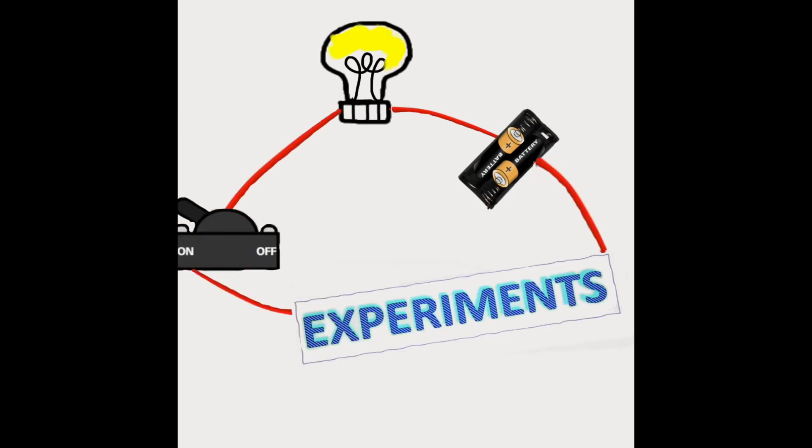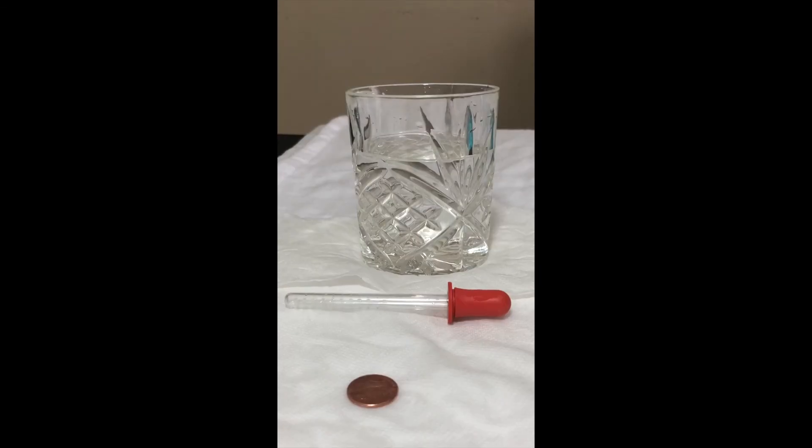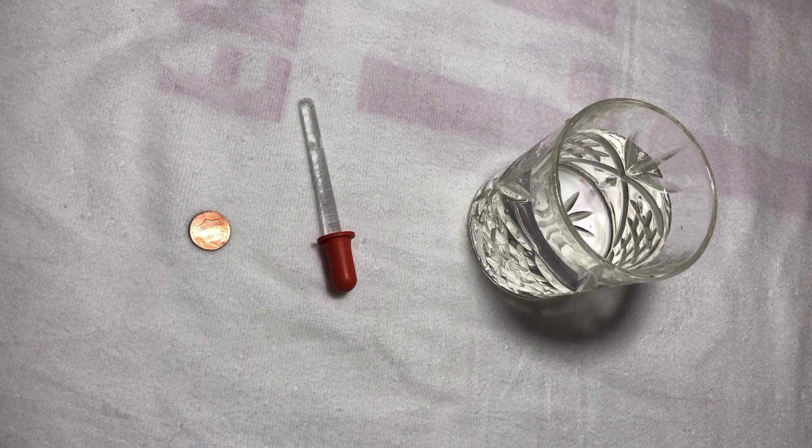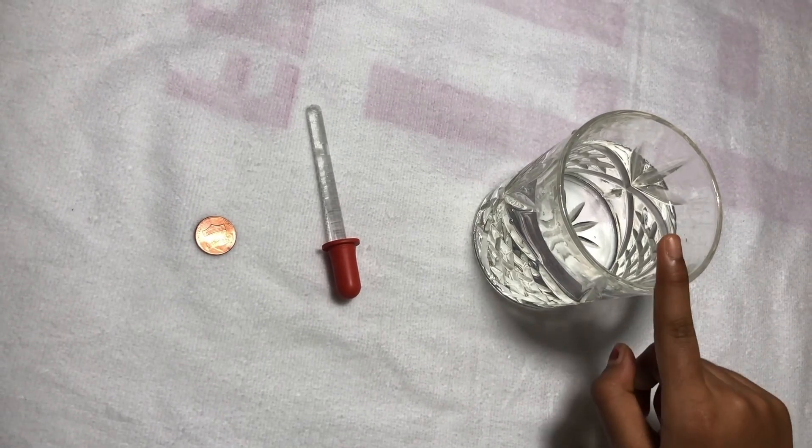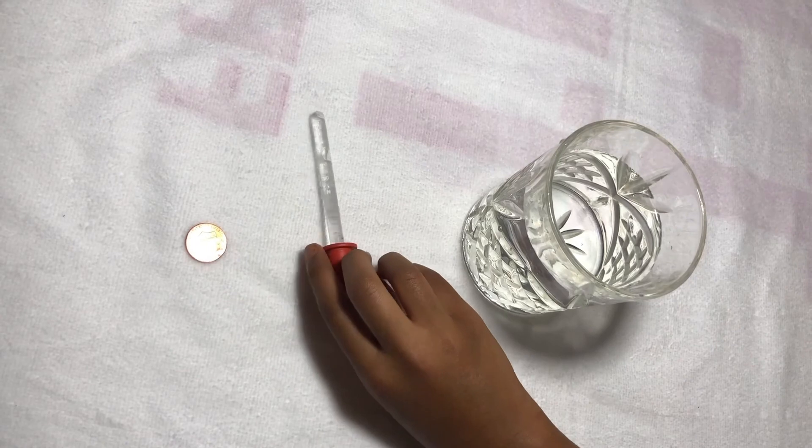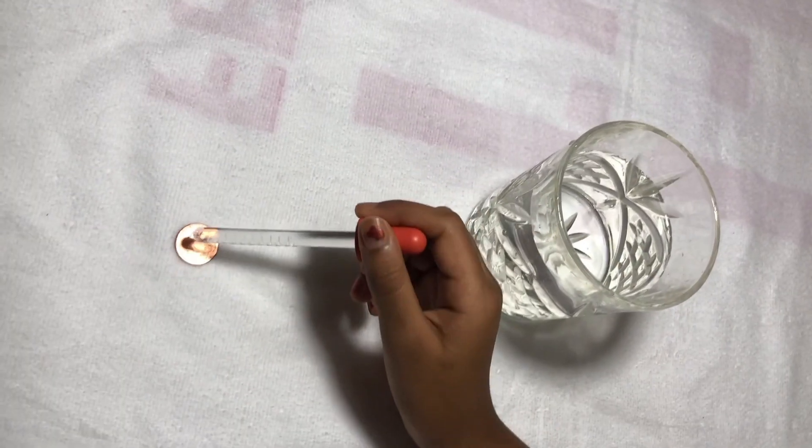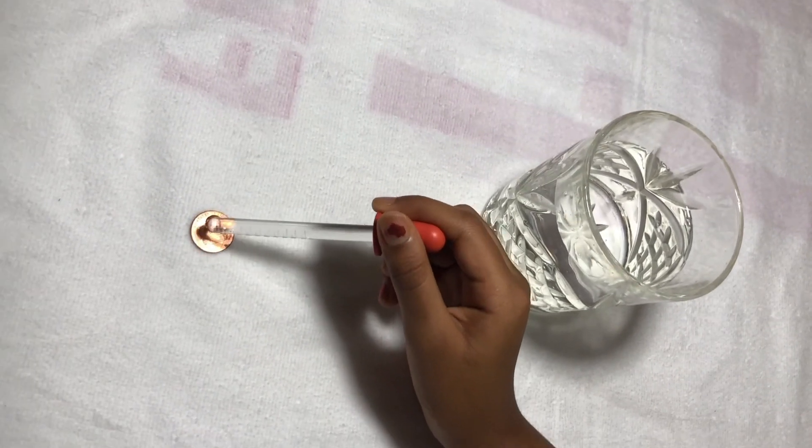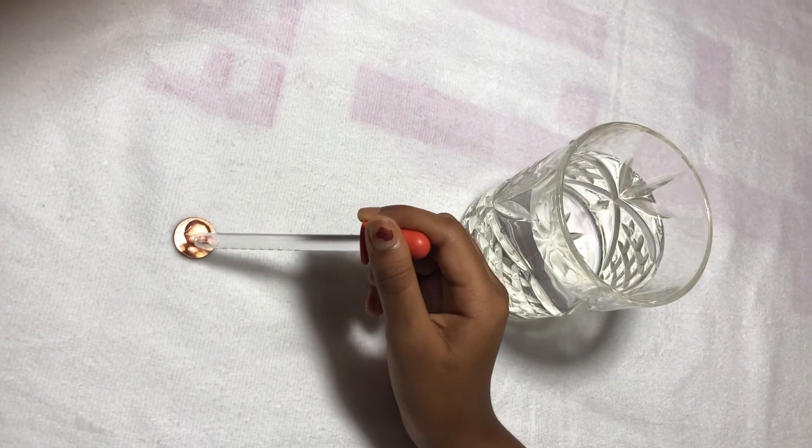So it's time for experiments. Let's demonstrate surface tension. For this experiment we'll be using some water, a dropper, and a coin. First you want to take your dropper and get some water into it. Then you want to put some of the drops onto the coin. You want to put it slowly so that they don't have any external force and don't break the surface tension.